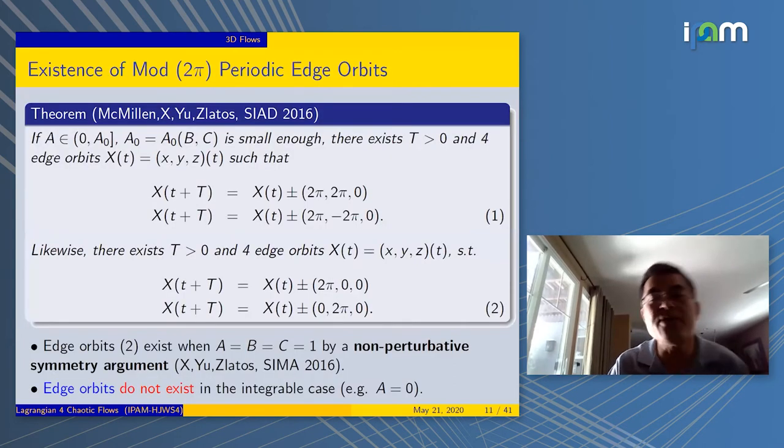We call these trajectories the edge orbits, because they leave the edges and go somewhere else. Mathematically, we could put a theorem saying that if a, b, or c is small, either one of these parameters, then you can find a trajectory that is essentially periodic if you wrap it back onto the torus.